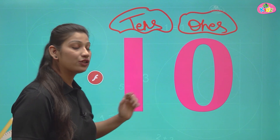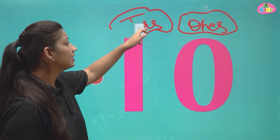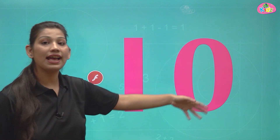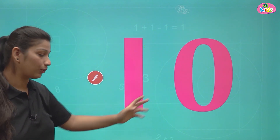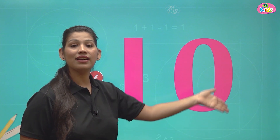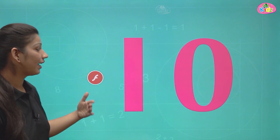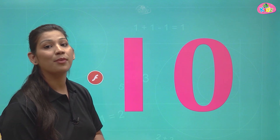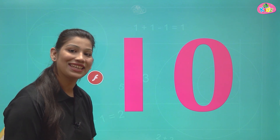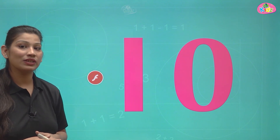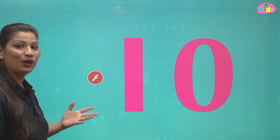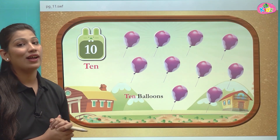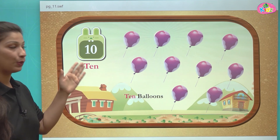One and zero together makes up number 10. This is how you make a zero, and this is a one. One and zero together makes up number 10. Let us understand more about number 10 with the help of a video.